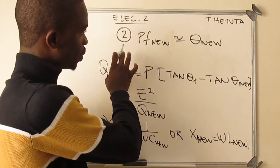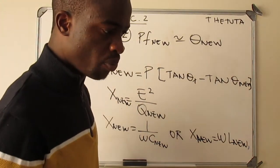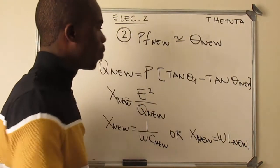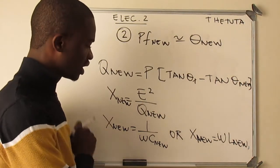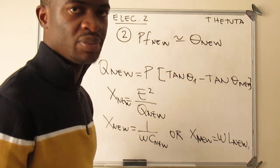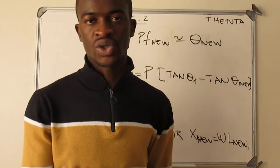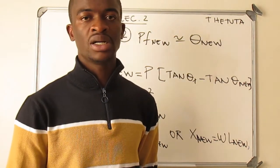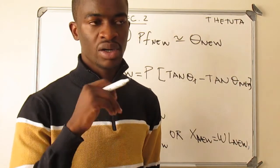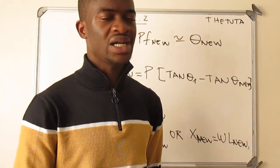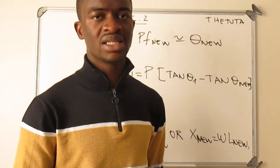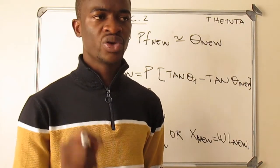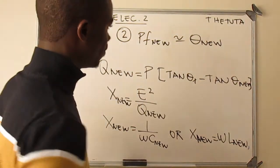If you master these two cases — when the component is given and you look for the new power factor, and when the new power factor is given and you calculate the component — that covers everything for chapter 2. Chapter 2 simply adds power factor correction on top of chapter 1. All the calculations remain the same as in chapter 1; the only addition is that at the end, if a component is connected in parallel with the load, you apply one of these two cases.